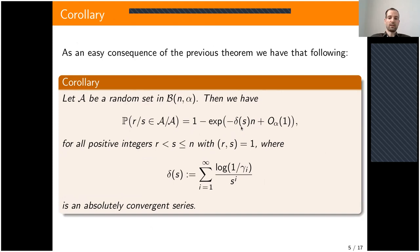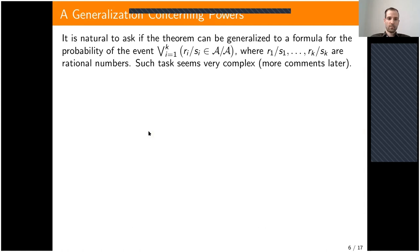In particular, if α equals one half, then the second-order linear recurrence β is essentially a normalized version of the Fibonacci numbers. These infinite series in the corollary depend on the denominator. A natural generalization would be to ask for the joint probability that several rational numbers belong to the random ratio set — or equivalently the disjoint probability, as the two are equivalent.